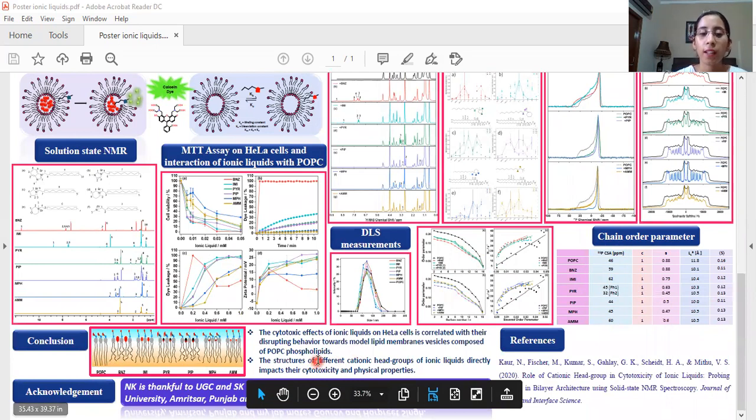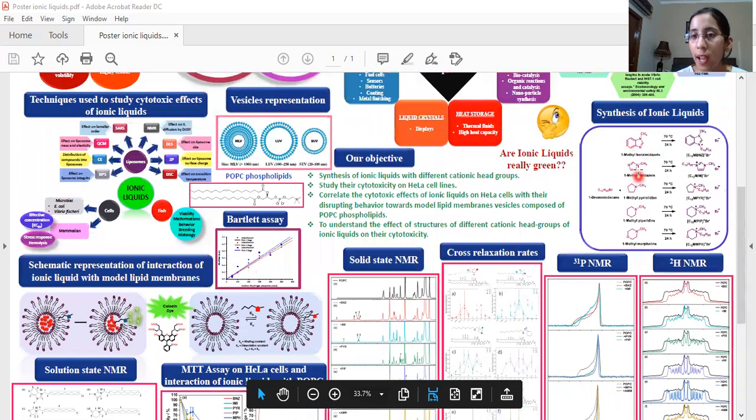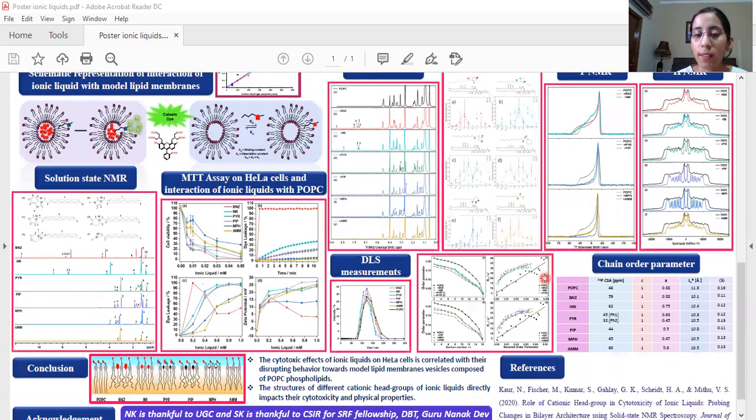So it can be concluded that the cationic head group of the ionic liquids do dictate the toxic behavior of these ionic liquids towards the HeLa cells or the lipid bilayer which we have studied and the number of oxygen atoms or the nitrogen atoms that we can see the size of the cations all decide their toxicity.